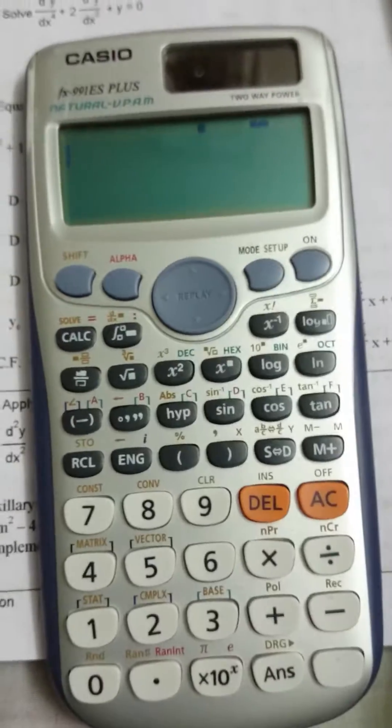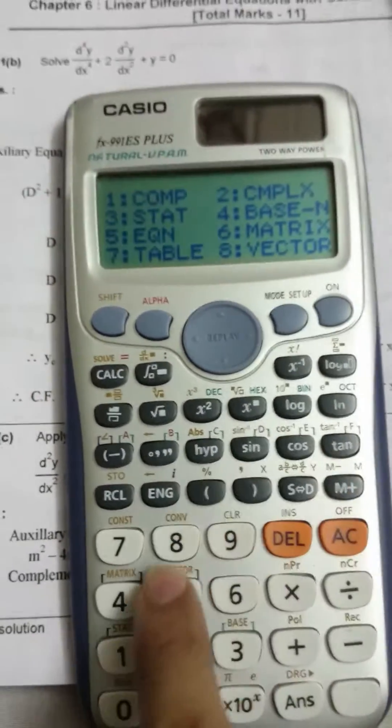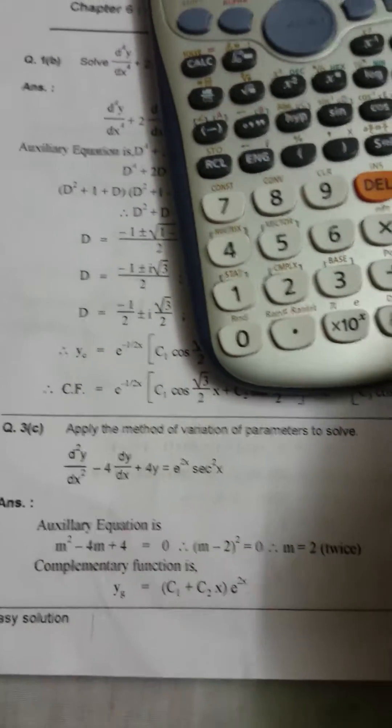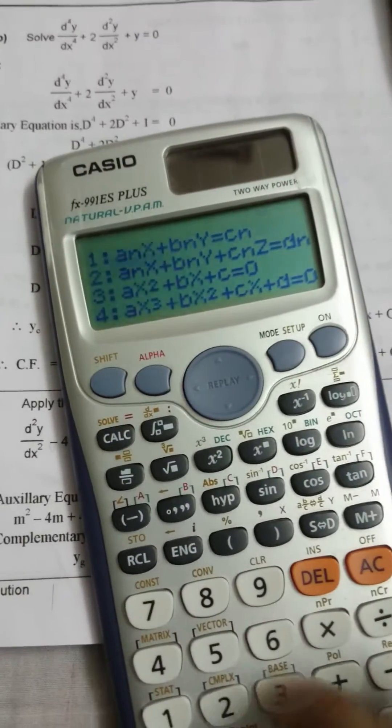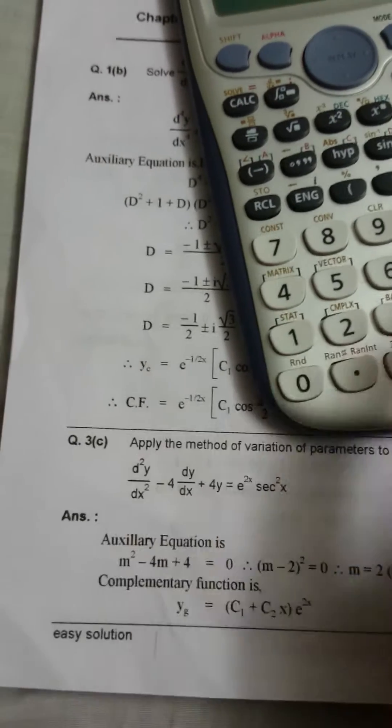We'll do this as we do for equations. First, press MODE, then 5 for equation. This equation is in quadratic form, so select 3 in the calculator. Now put the value: m² has coefficient 1.